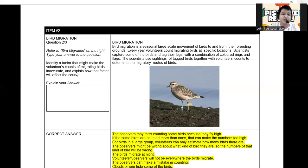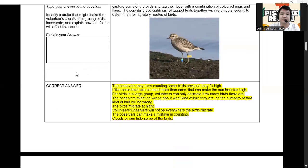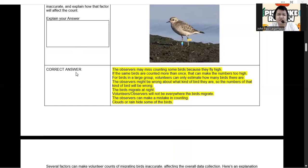Now, your task is to identify a factor that might make the volunteers' count of migrating birds inaccurate and explain how that factor will affect the count. So our right answers here are: the observers may miss counting some birds because they fly high. That's one point.